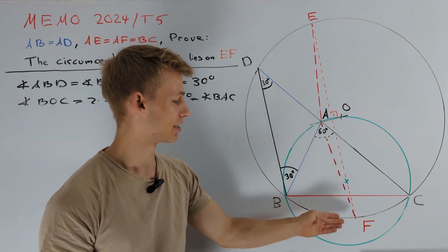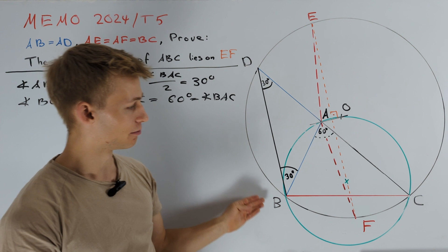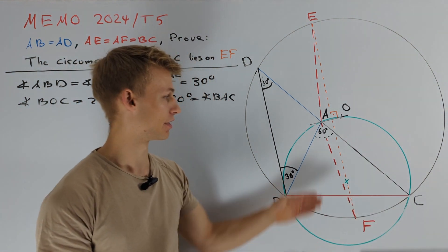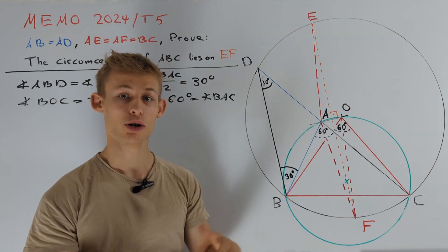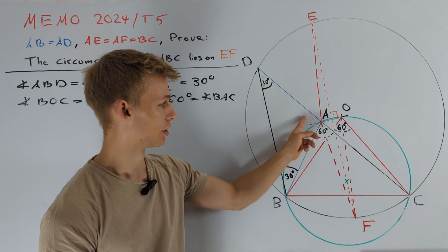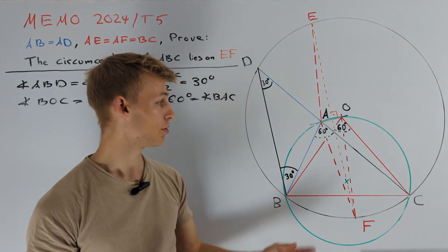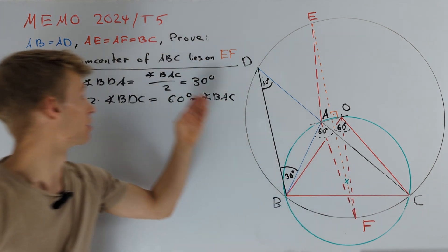We know that OF is just the radius of the circumcircle of triangle DBC. And therefore, we have that OF is equal to OC and OB. We already figured out that it is enough to prove that OF is equal to AF. But we already know that AF is equal to BC by our given condition.